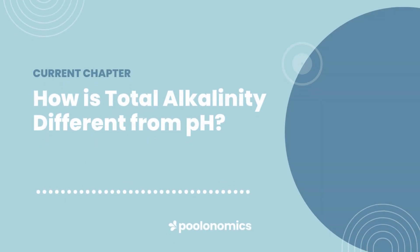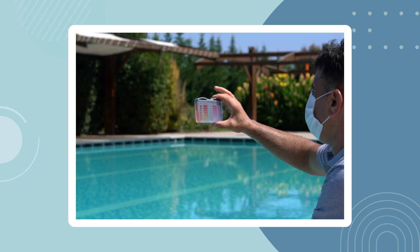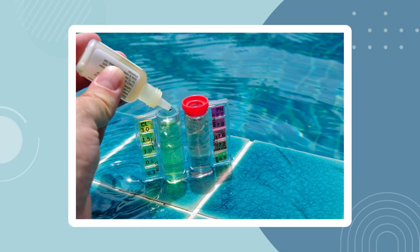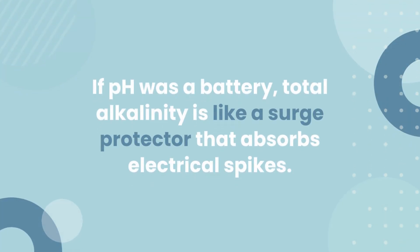How is total alkalinity different from pH? It's easy to confuse pH and total alkalinity because alkaline is a measurement on the pH scale, but they're not the same thing. When you measure the pH level, you're looking at how acidic the water is based on how much or how little acid is dissolved in your water — represented on the pH scale from 1 to 14. When you measure total alkalinity, you're looking at how effective your water is at negating acid before it has a chance to influence your pH level, represented in parts per million (ppm). If you imagine pH as a battery, total alkalinity is like a surge protector, absorbing electrical spikes that would otherwise wreak havoc on the battery.